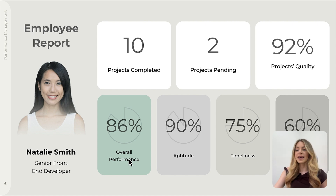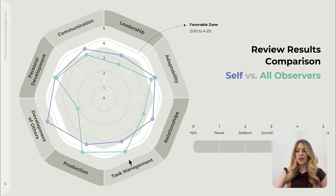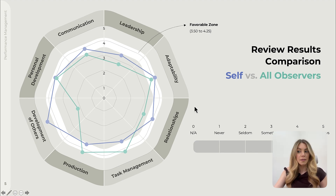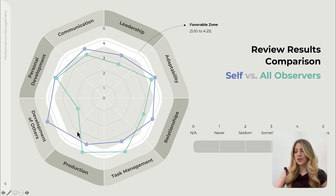After compiling the 360-degree review results, you can compare how an employee sees themselves versus how others see them. This chart highlights areas needing improvement and potential blind spots across these different criteria.